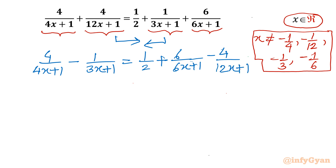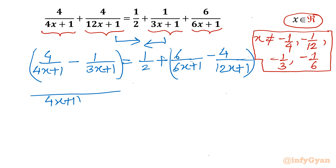Now I will take the LCM of the left-hand side terms. The denominator will be (4x+1)(3x+1). After simplification, the numerator comes out to 8x+3 on the LHS.